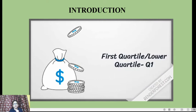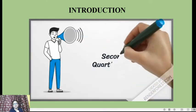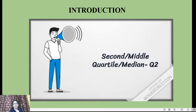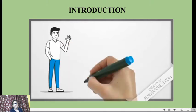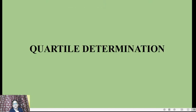The first quartile is also called the lower quartile or Q1. The second quartile is the middle quartile, also known as the median or Q2. The third quartile is the upper quartile or Q3. These are the 3 quartiles.